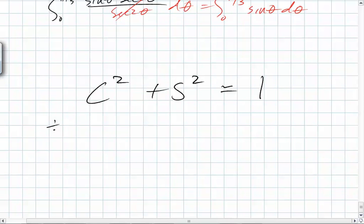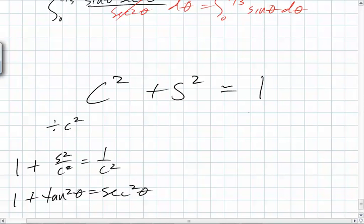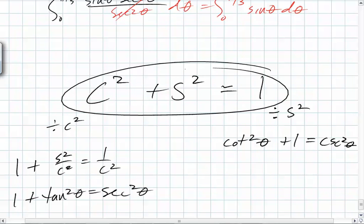Divide by cosine squared. You end up with 1 plus sine squared over cosine squared equals 1 over cosine squared, which is 1 plus tangent squared equals secant squared. The other path is dividing by sine squared. And then you get cotangent squared theta plus 1 equals cosecant squared theta. So you have two paths.